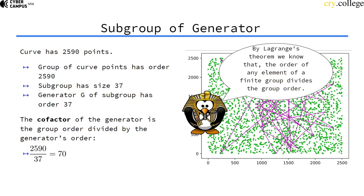So with that in mind, we can introduce another term, which is the cofactor. The cofactor of a generator is the order of the group, so all points, the number of all points on the curve, divided by the points that the generator can generate, so that the generator has in its subgroup. As we have seen, the generator has 37 points that it can reach, and the overall curve has 2590 points.